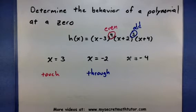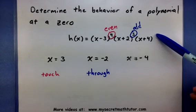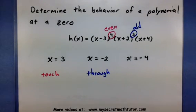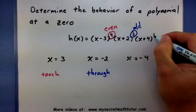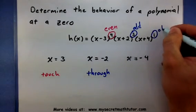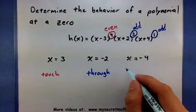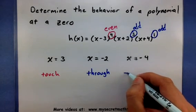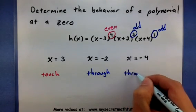Now this last one is kind of tricky. It looks like it doesn't even have a power. For ones like these, you want to imagine a 1. And 1 is odd. So this is how you can tell that at x equals negative 4, it will go through.